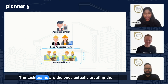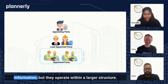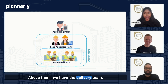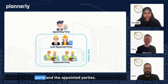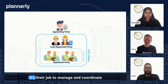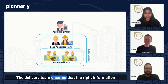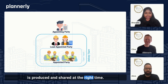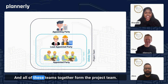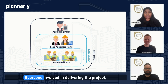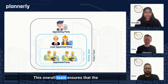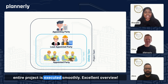The task teams are the ones actually creating the information, but they operate within a larger structure. Above them, we have the delivery team that includes both the lead appointed party and the appointed parties. It's their job to manage and coordinate the information coming from the task teams, ensuring everything stays on track. The delivery team ensures that the right information is produced and shared at the right time. And all of these teams together form the project team — everyone involved in delivering the project from the client to the contractors — ensuring that the entire project is executed smoothly.